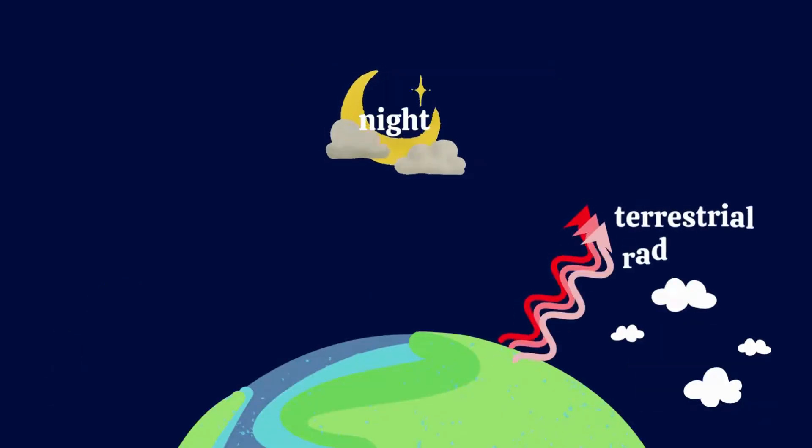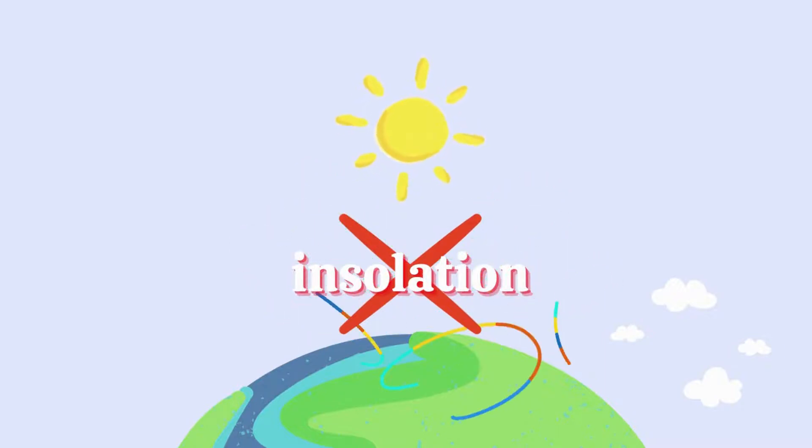So, just to clarify, it is actually the terrestrial radiation that heats up our Earth, not the insolation. Well, not directly, anyway.